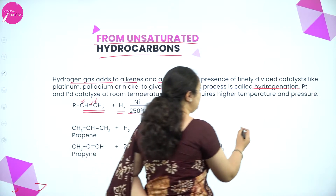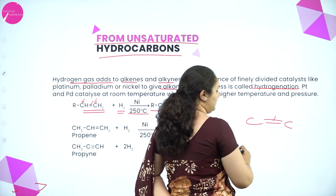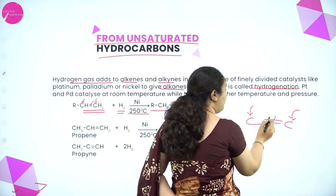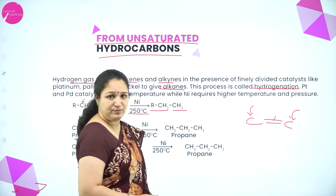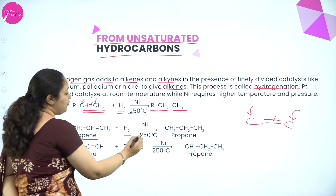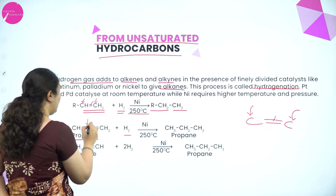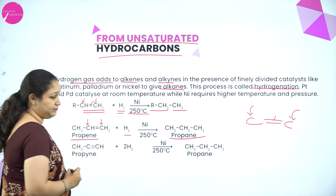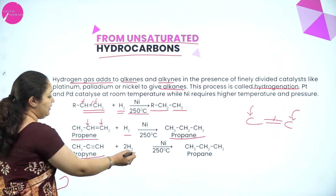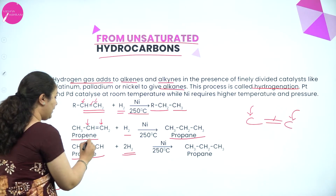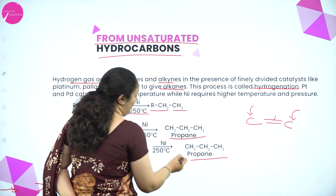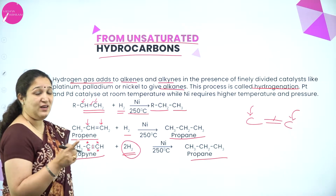Always remember: if you have a carbon-carbon double bond and you want to break it, you need to add something to each carbon. To break a bond you add something; to form a bond you remove something. For example, CH₃CH=CH₂ with hydrogen in the presence of nickel at 250°C gives propane. Similarly, for propyne, two molecules of hydrogen are required because there are two bonds to break, giving propane.